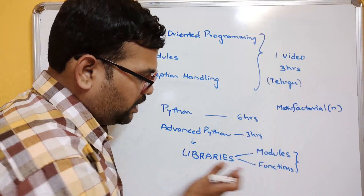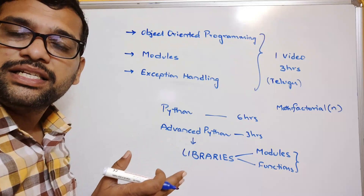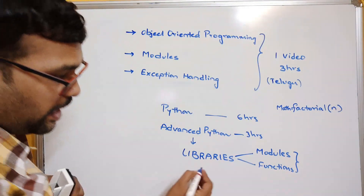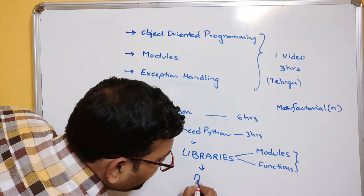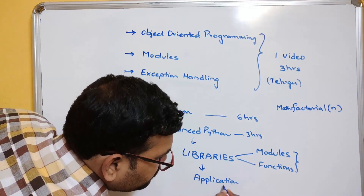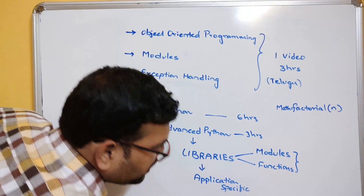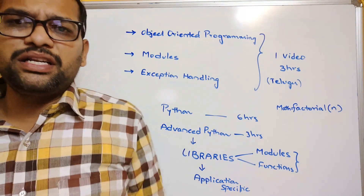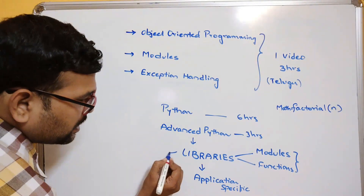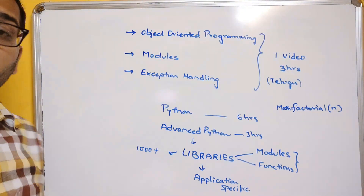Such functions are available in the libraries. We can use libraries to develop our applications very easily. Now, libraries are application-specific — we don't need to learn all libraries. There are thousands of libraries available in Python — thousand-plus libraries are available.